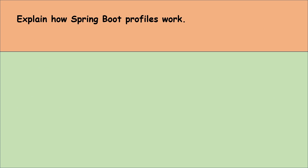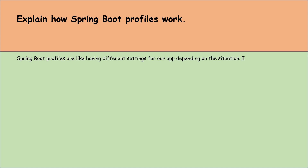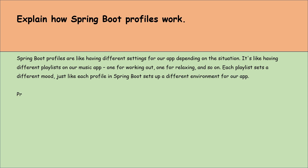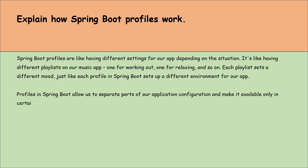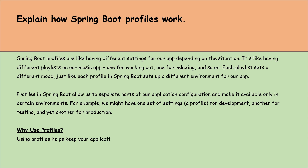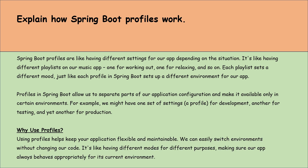Explain how Spring Boot profiles work. Spring Boot profiles are like having different settings for our application depending on the situation — like having different playlists on a music app, one for working out and one for relaxing. Each profile in Spring Boot sets up a different environment for our application. Profiles allow us to separate parts of our application's configurations and make them available only in certain environments. For example, we might have one set of settings for development, another for testing, and yet another for production. Using profiles helps keep our application flexible and maintainable — we can easily switch environments without changing our code.